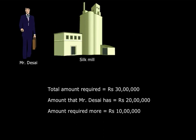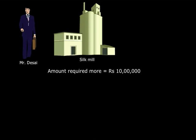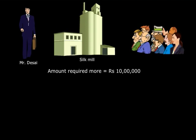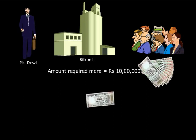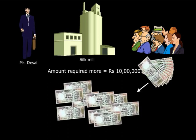What he does is he decides to raise this money in small parts from people who are interested in that business. He divides 10 lakh rupees into 10,000 parts and each part is of rupees 100. So in this case, he divided a big amount of money into a large number of smaller parts.